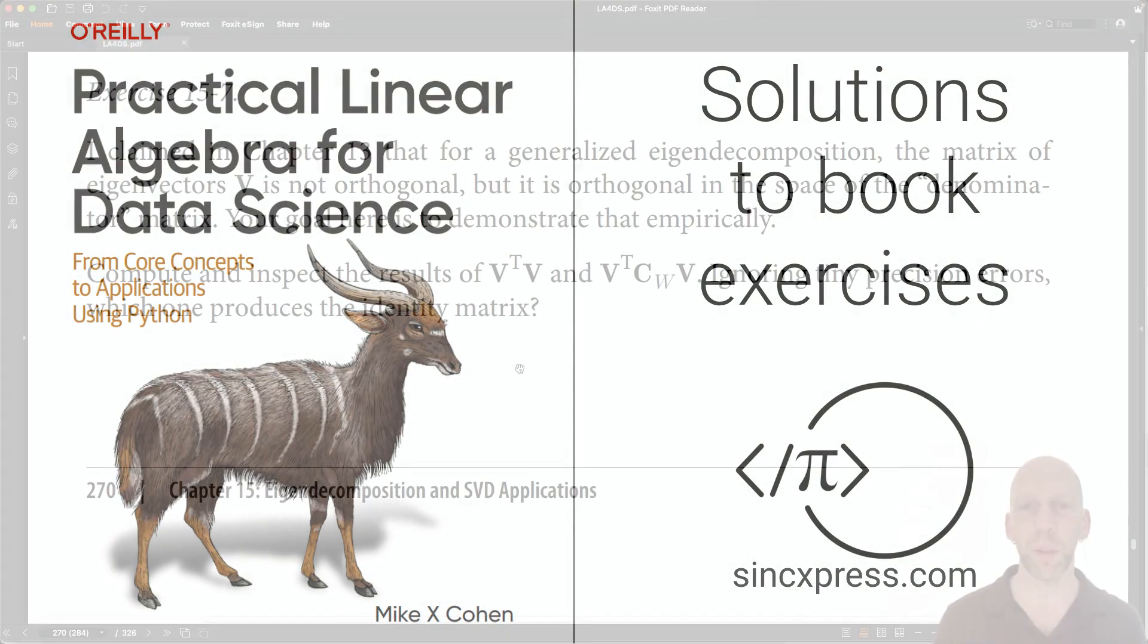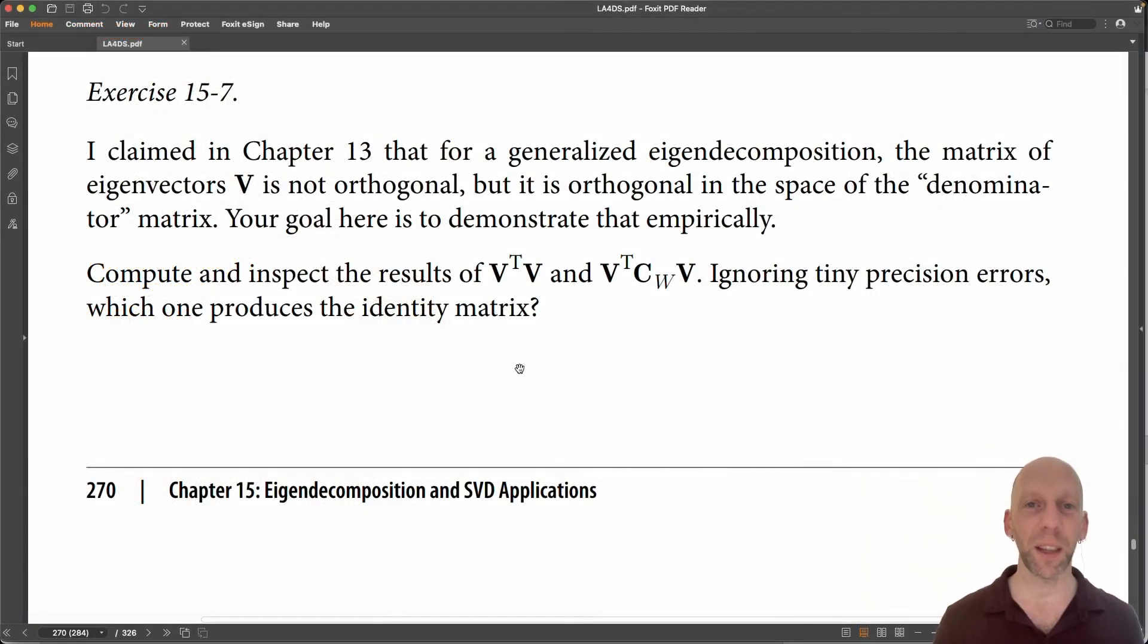I know the previous couple of exercises were pretty challenging, so here's an exercise that's pretty easy. This follows up from a point I made in chapter 13, that in a generalized eigendecomposition, the matrix of eigenvectors is not orthogonal, meaning V transpose V is not the identity matrix.